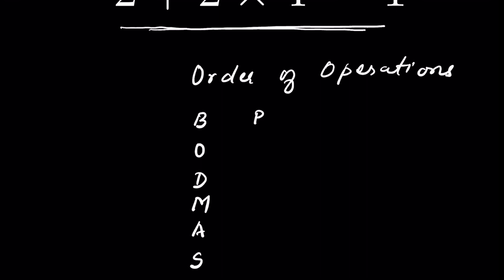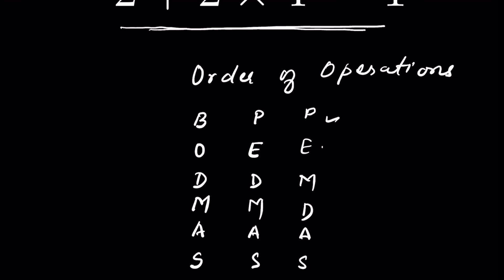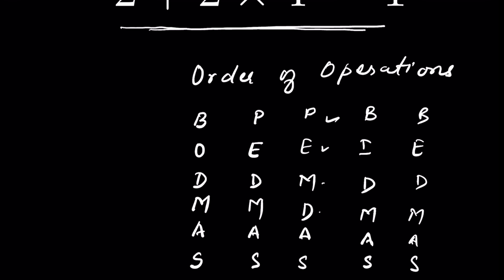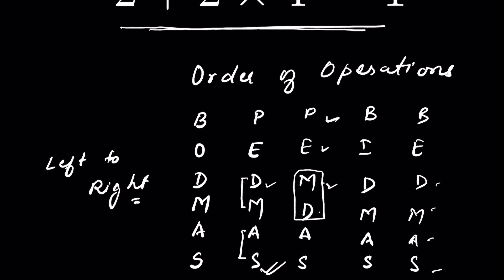We also have PEDMAS: P for Parenthesis, E for Exponent, Division, Multiplication, Addition, Subtraction — or PEMDAS: Parenthesis, Exponent, Multiplication, Division, Addition, Subtraction. Similarly BIDMAS or BEDMAS. In all of these, Division and Multiplication, Addition and Subtraction are the same. You might get confused when multiplication appears ahead of division or vice versa, but we solve them from left to right. There is no exact fixed order for Division/Multiplication or Addition/Subtraction — we solve whichever comes first from left to right.